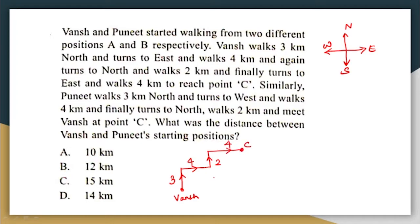What is Puneet doing? Puneet is again walking 3 km north, turning to west, and again turning to north and finally walks 2 km. And Puneet also reaches this point C.